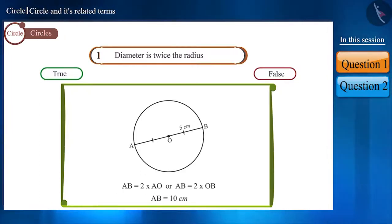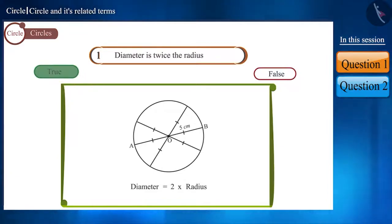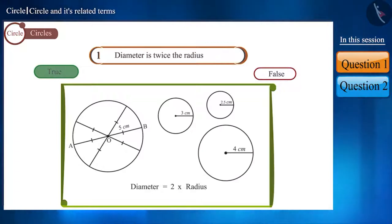Thus, we can say that all diameters of a circle have the same length which is twice their radius. Therefore, this statement is true. You can pause the video and test this for more circles.